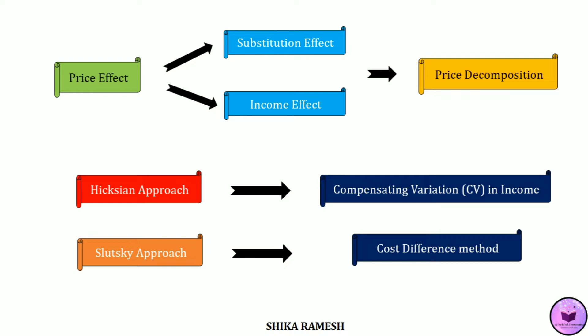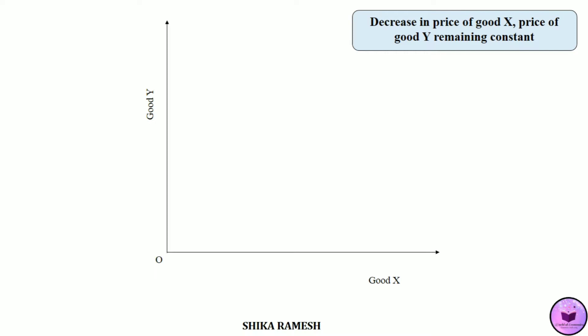We shall explain Slutsky's cost difference method for the case wherein the price of good Y remains the same and the price of good X decreases. Initially, the consumer's budget line is given as RS, wherein the consumer is in equilibrium at point A at U1 utility level. Here, the consumer consumes OE amount of good X and OH amount of good Y.